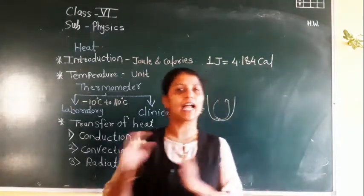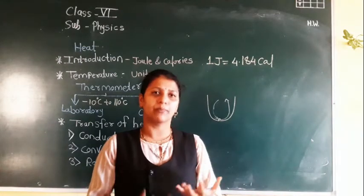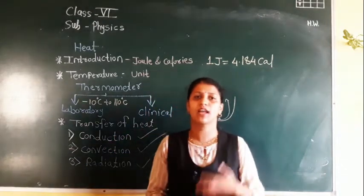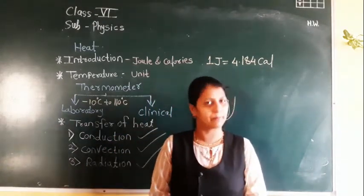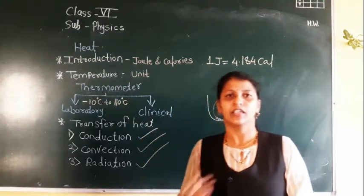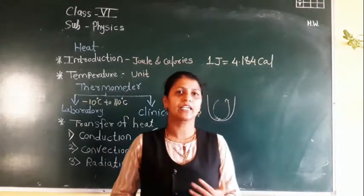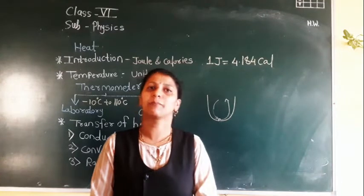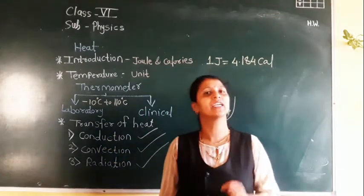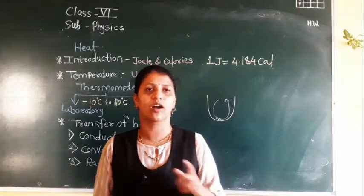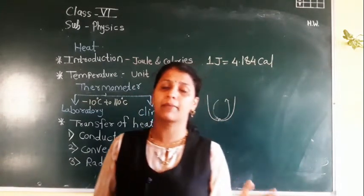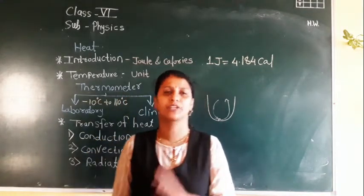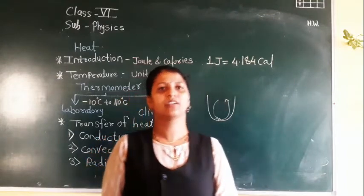We also covered conductors and insulators. A material through which heat can transfer is called a good conductor of heat — for example, metals. A material which does not allow heat to pass through it is called a bad conductor, also known as an insulator — for example, plastic.